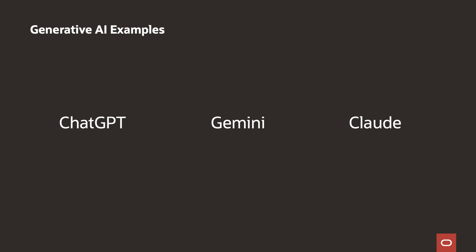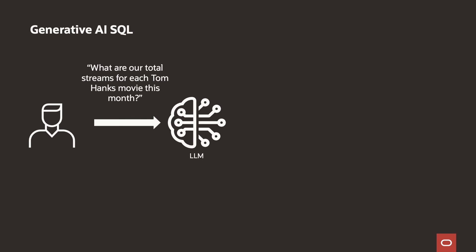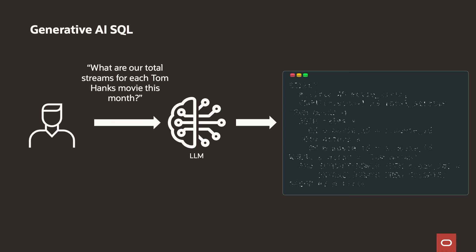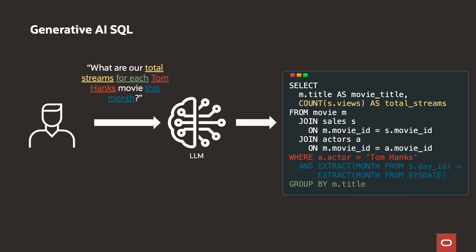Generative AI also allows you to generate user outcomes in database scenarios. For example, you can generate SQL statements for the user. When a user asks 'what are our total streams for each Tom Hanks movie this month?', you can send this to a large language model. That model will parse the information and generate a SQL statement answering the question, because it has been trained to parse the different pieces of text and generate the right SQL syntax.